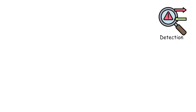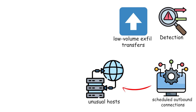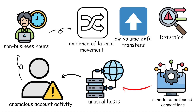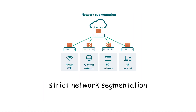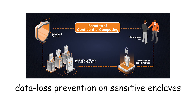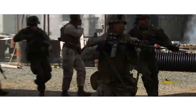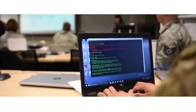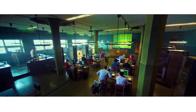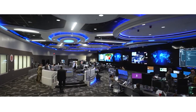Detection is subtle: low-volume exfil transfers, scheduled outbound connections to unusual hosts, anomalous account activity during non-business hours, and evidence of lateral movement. Defenders must apply persistent threat hunting, strict network segmentation, least-privilege access models, and data loss prevention on sensitive enclaves. In wartime, rapid isolation of compromised enclaves, credential rotation, and prioritized evacuation of sensitive material become urgent. The attacker's calculus prioritizes stealth over spectacle; the defender's calculus prioritizes early detection and containment to deny a strategic advantage.